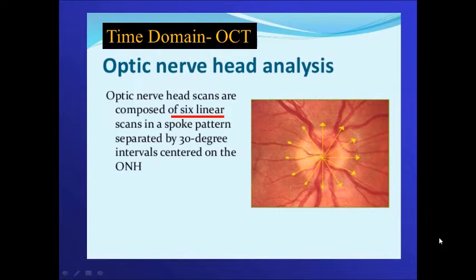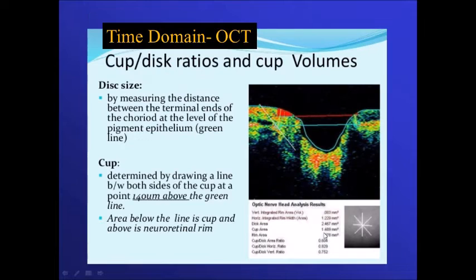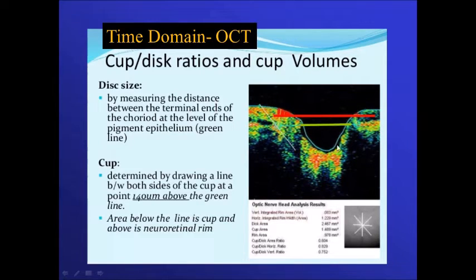For the optic disc, the time domain used to apply six linear scans. The level of the retinal pigment epithelium is determined, then the machine goes up by 140 microns and creates a level — anything above that red line is considered rim area, anything below it is cup area. So this is the way it works with the time domain.